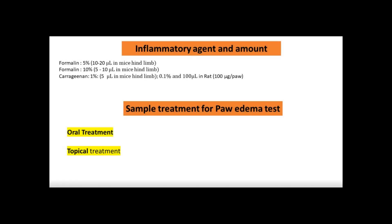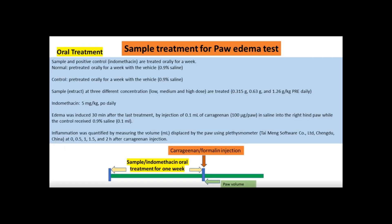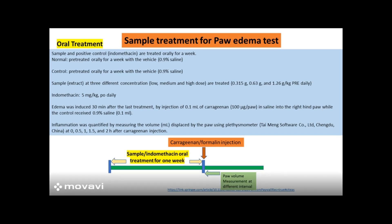Talking about sample treatment, we can treat the sample through two different methods: oral treatment and topical treatment. For oral treatment, the sample is administered orally. Both the sample and the positive control — a drug like indomethacin used for comparison — can be given orally. For the normal group, normal saline is given orally; for the control group, the vehicle or normal saline is given; and for the sample group, different extracts at different concentrations are given orally.